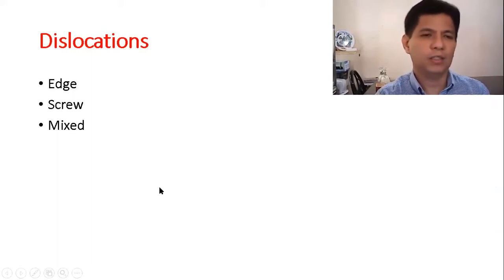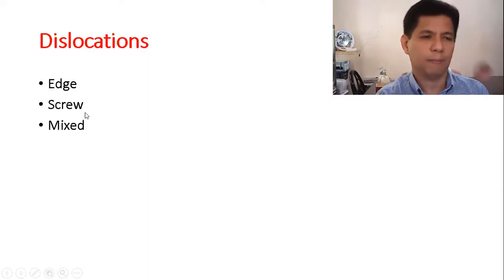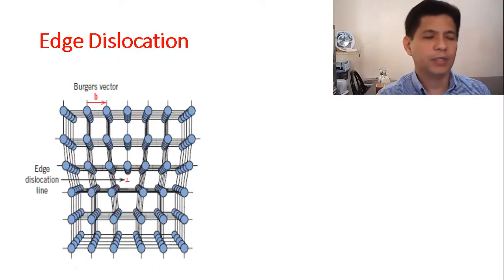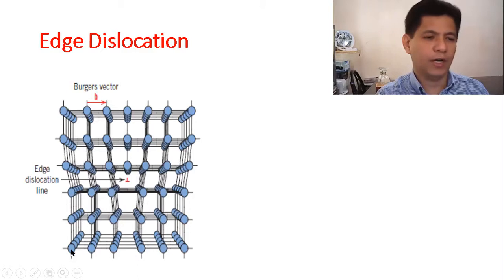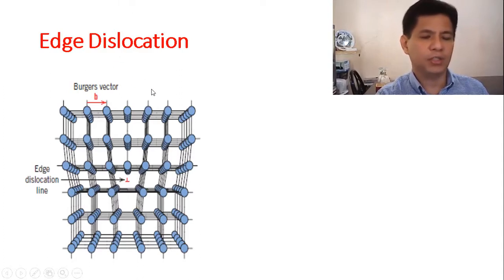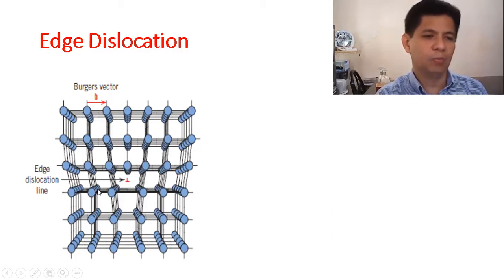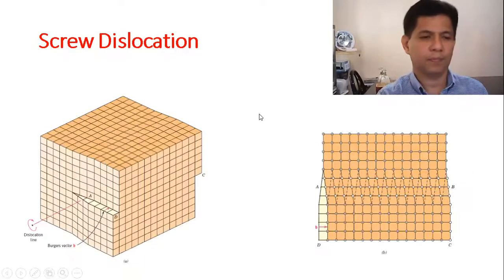Next we will discuss dislocation defects in solids. There are three types: edge dislocation, screw dislocation, and mixed dislocation. In edge dislocation, one line of atoms is missing, causing the edge of the crystal to move towards the center. As you can see in the illustration, the edge on the lower part of the crystal is moved toward the center on both sides — this is edge dislocation.